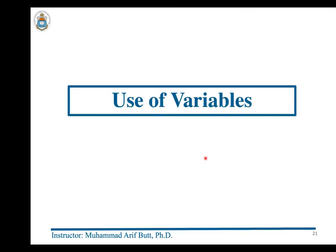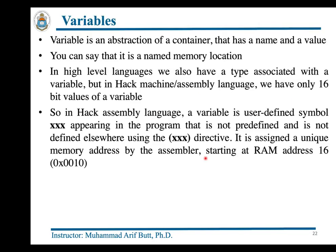Now is the time to talk about the third category of symbols: variables. A variable is an abstraction of a container that has a name and a value — a named memory location. In high-level languages we also have a type, but in Hack assembly language variables are only 16-bit values. A variable is a user-defined symbol that is not predefined and is not defined as a label; the assembler assigns it a unique memory address starting at RAM address 16.